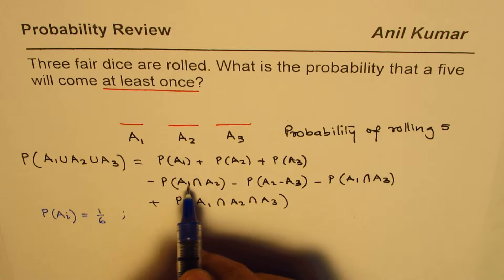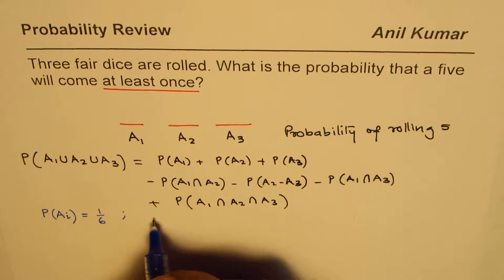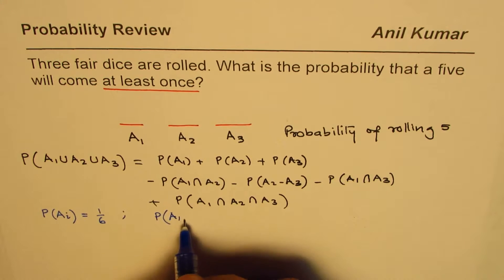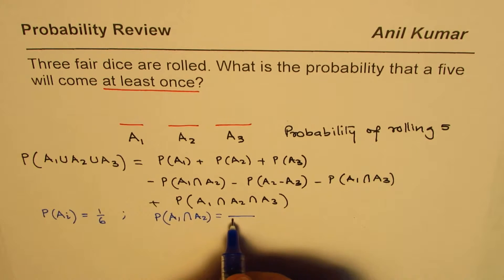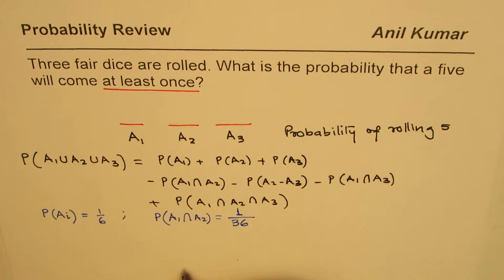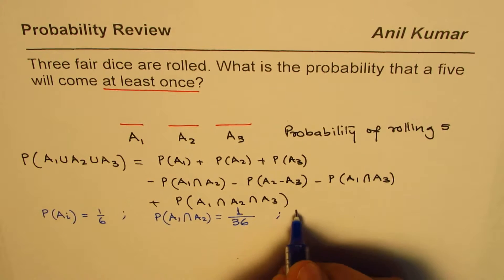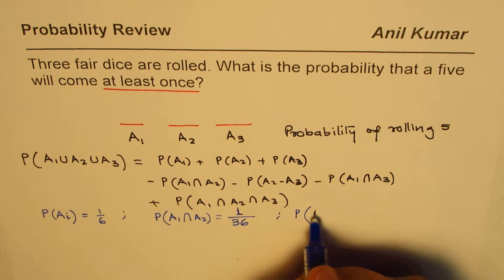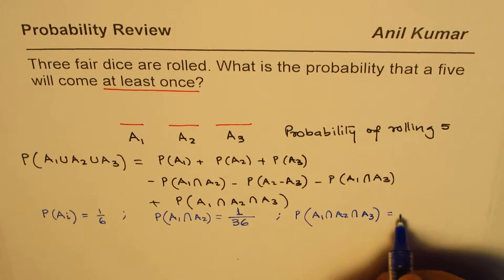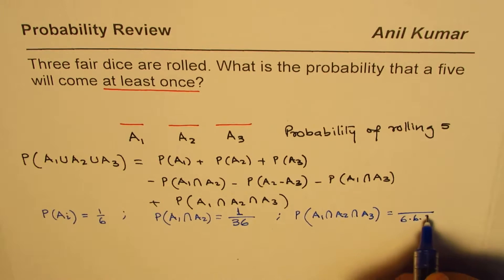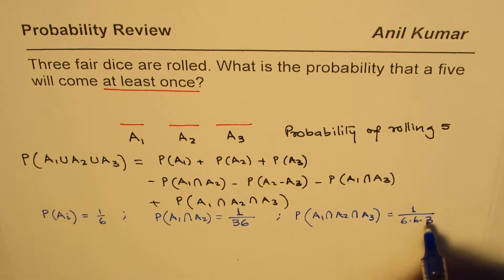What is the probability of the intersection — that is, rolling two dice and getting five on both? The probability of A1 ∩ A2 is 1/36, since the total number of options is 6 × 6 = 36 and there is only one favorable case. Similarly, the probability of the intersection of all three, A1 ∩ A2 ∩ A3, is 1/216, since 6 × 6 × 6 = 216 and there is only one such case.